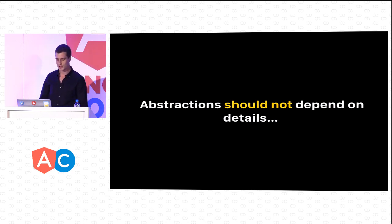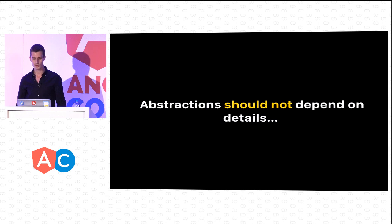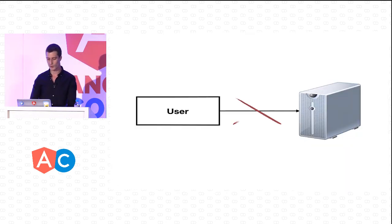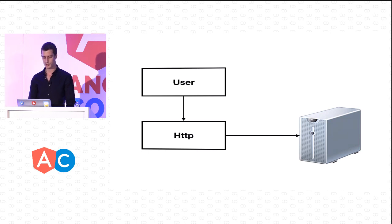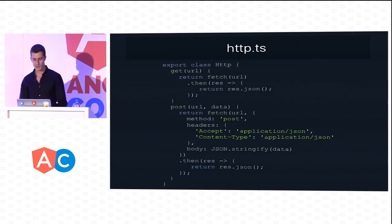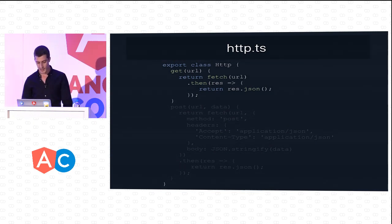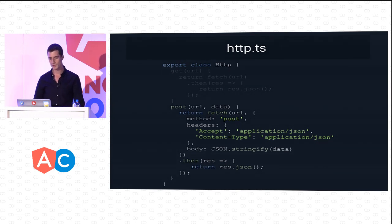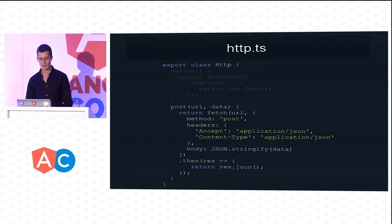The Dependency Inversion Principle also states that abstraction should not depend on details, but our user was dependent on the way we achieve RESTful communication with the server. So we can refactor our code and introduce one more level of indirection. We can introduce an HTTP module with two methods: a GET method that accepts a URL and makes an HTTP GET request using the HTML5 Fetch API, and a POST method that makes a POST request with appropriate headers and body, returning the JSON representation of the response in both cases.